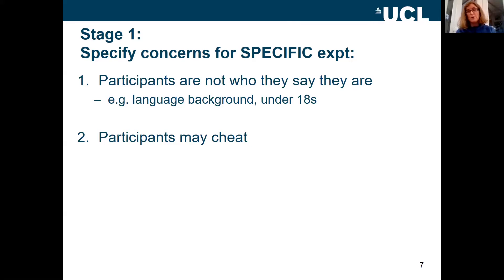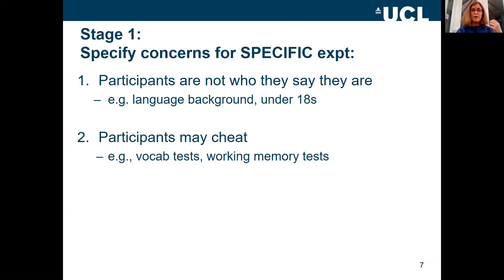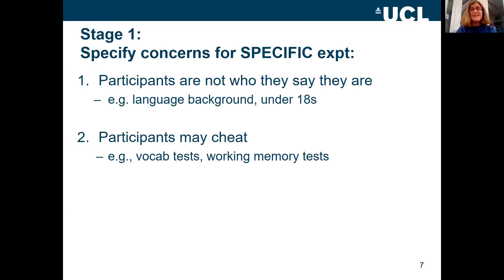The second concern area is explicit cheating. For example, if you're running memory experiments or vocabulary tests, you might have participants looking things up online or writing things down. So you might have a task where participants might explicitly cheat. There are many tasks where it's not possible to cheat — if you're doing a speed or reaction time judgment, you can't cheat — but think about whether your specific experiment has the potential for cheating.